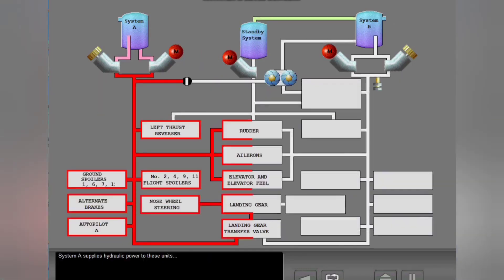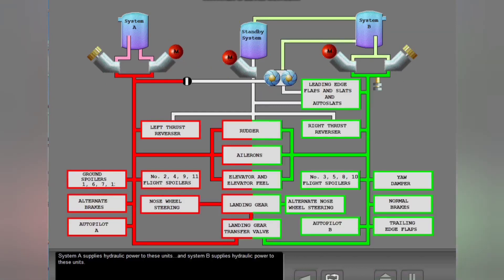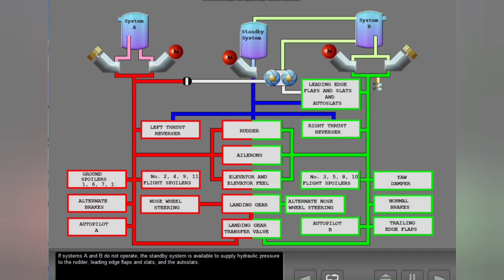System A supplies hydraulic power to its associated units, and System B supplies hydraulic power to its associated units. If Systems A and B do not operate, the standby system is available to supply hydraulic pressure to the rudder, leading edge flaps and slats, and the auto slats.